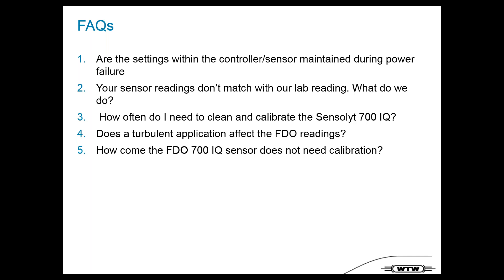How often do you need to clean and calibrate the Sensolite 700 IQ pH sensor? For online pH measurement we recommend calibrating every two to four weeks, and of course cleaning before calibration. In the field, end users have different timing — some do it weekly, some only once a year — but as the manufacturer we recommend an interval of two to four weeks for accurate readings.